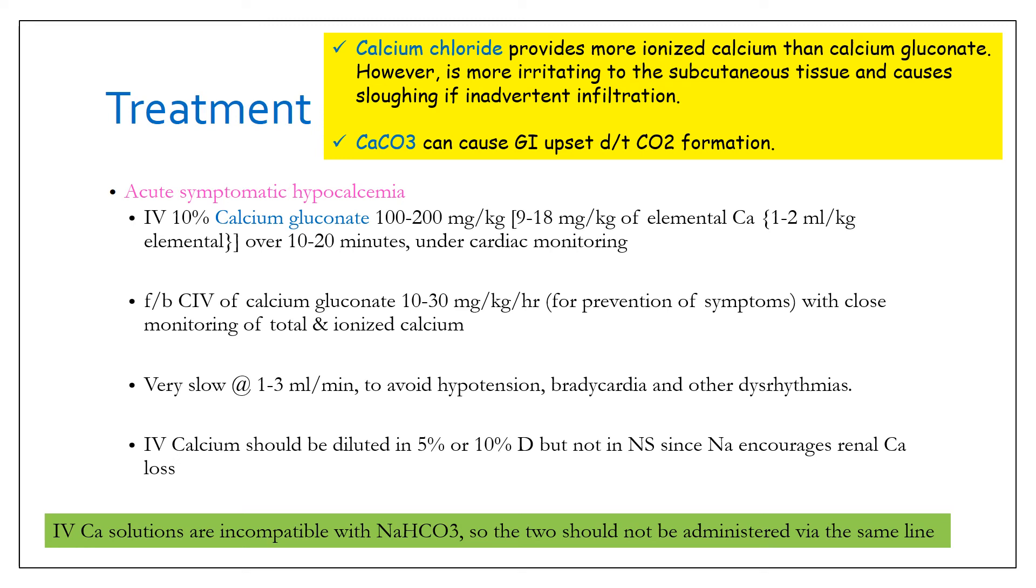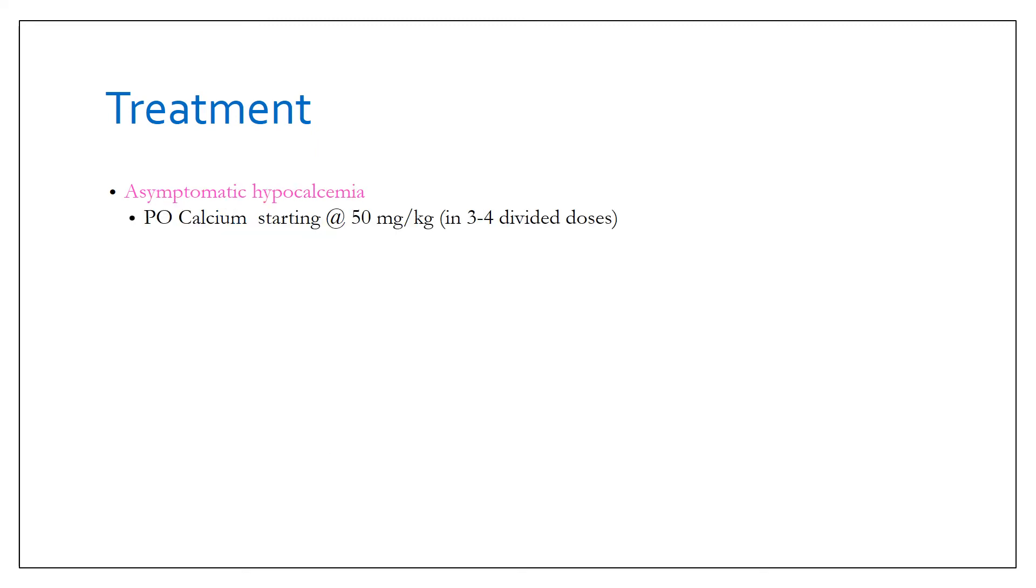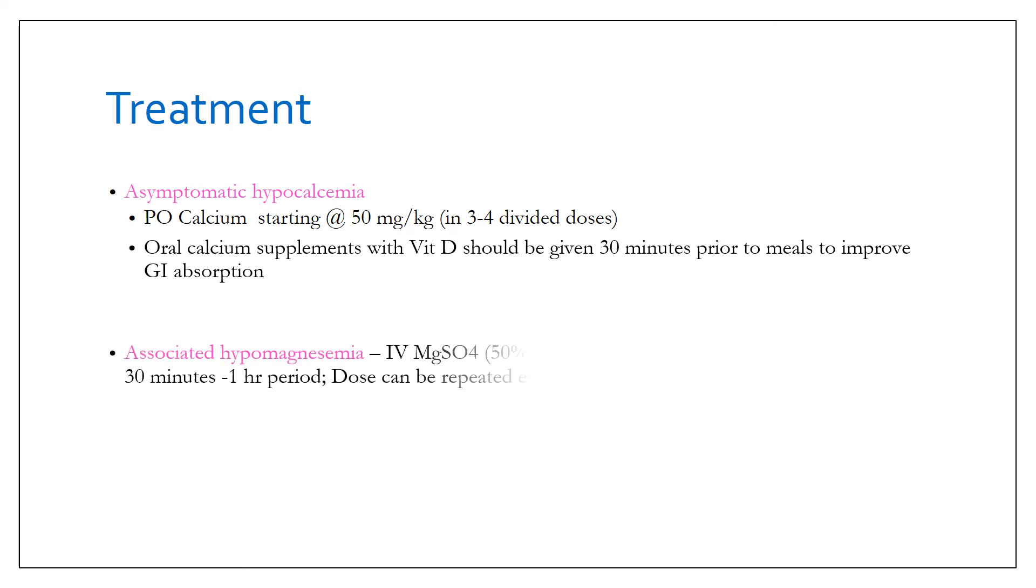Treatment of asymptomatic hypocalcemia, that is which you detect incidentally, comprises of starting oral calcium at the rate of 50 mg per kg in 3 to 4 divided doses. Oral calcium supplements with vitamin D should be given 30 minutes prior to meals to improve the gastrointestinal absorption of calcium.